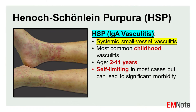Henoch-Schönlein purpura (HSP), also known as IgA vasculitis, is a systemic small vessel vasculitis characterized by the deposition of IgA-containing immune complexes in the vessel walls. It is the most common childhood vasculitis, accounting for approximately 90% of cases occurring in children aged 2 to 11 years.